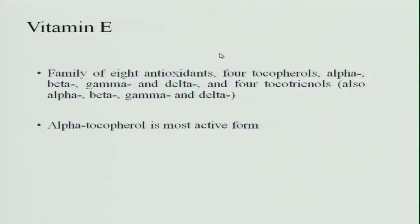Vitamin E is a family of 8 antioxidants: 4 tocopherols — alpha, beta, gamma, and delta — and 4 tocotrienols — again alpha, beta, gamma, and delta. The main active form among these is alpha-tocopherol.